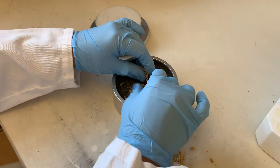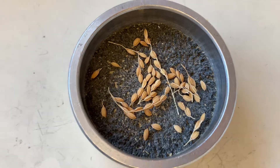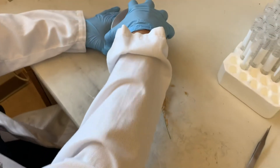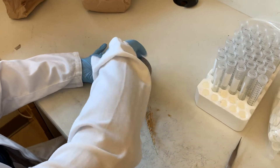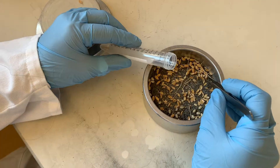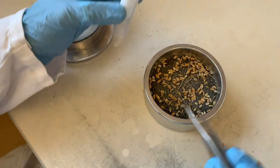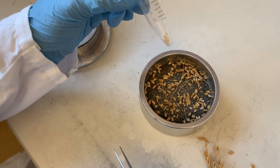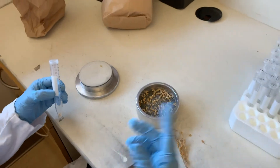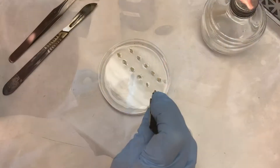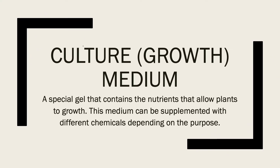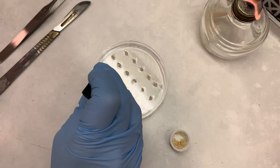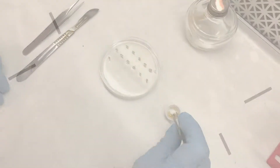In our transformation protocol, we start with mature rice seeds. First, we grind them up to remove the outer husk and reveal the seeds inside. We place the seeds in tubes and sterilize them to eliminate any microorganisms growing on the seeds. Then we grow them in a special gel called a culture or growth medium, which contains certain chemicals that will start the process of growing a mass of cells called a callus.